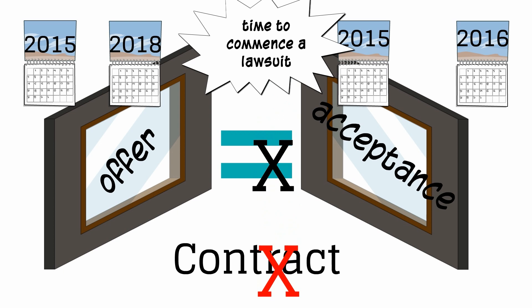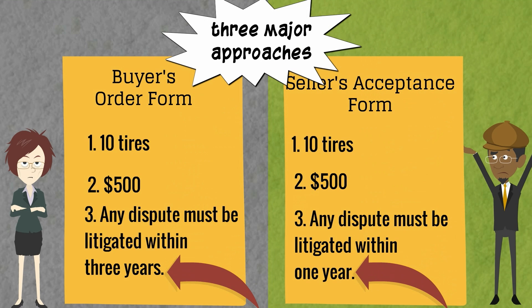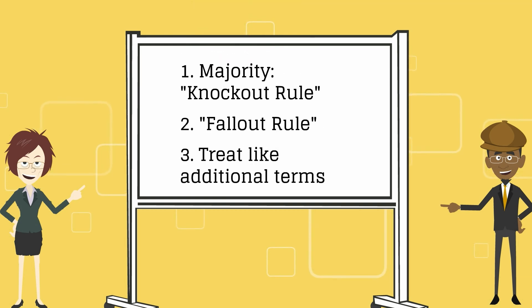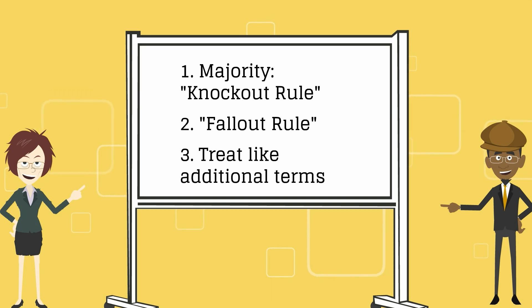So here we have different or contradicting terms. Under the traditional mirror image rule, because the seller's terms are different from the buyer's terms, we would not have a contract. But the UCC tells us that even if an acceptance doesn't match the offer, we can still have a contract. There are three major approaches that courts take to deal with contradictory or different terms in an acceptance: the knockout rule, the fallout rule, and treating the contradictory terms the same as additional terms. The most common approach is the knockout rule.